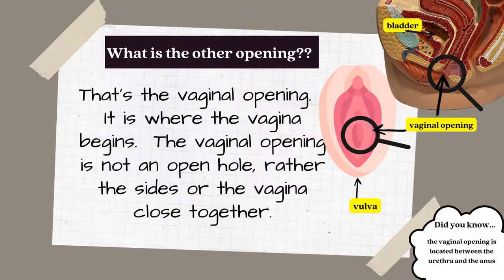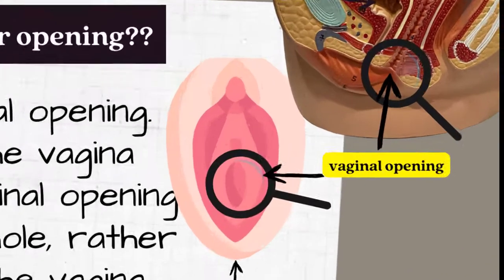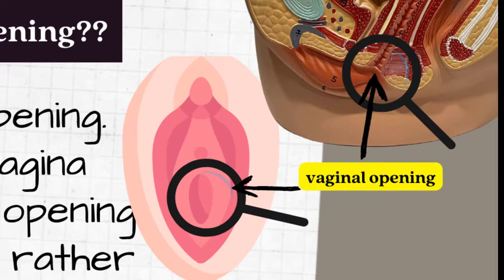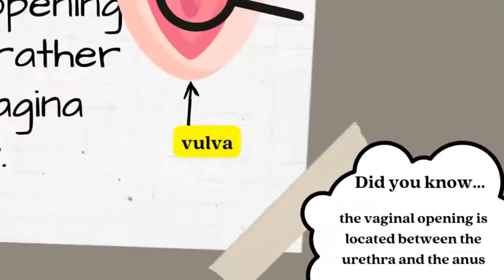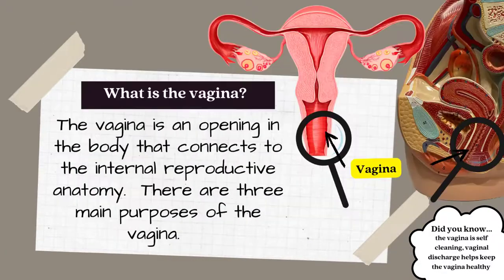The other opening is the vaginal opening — it is where the vagina begins. The vaginal opening is not an open hole; rather, the sides of the vagina close together. Did you know the vaginal opening is located between the urethra and the anus?